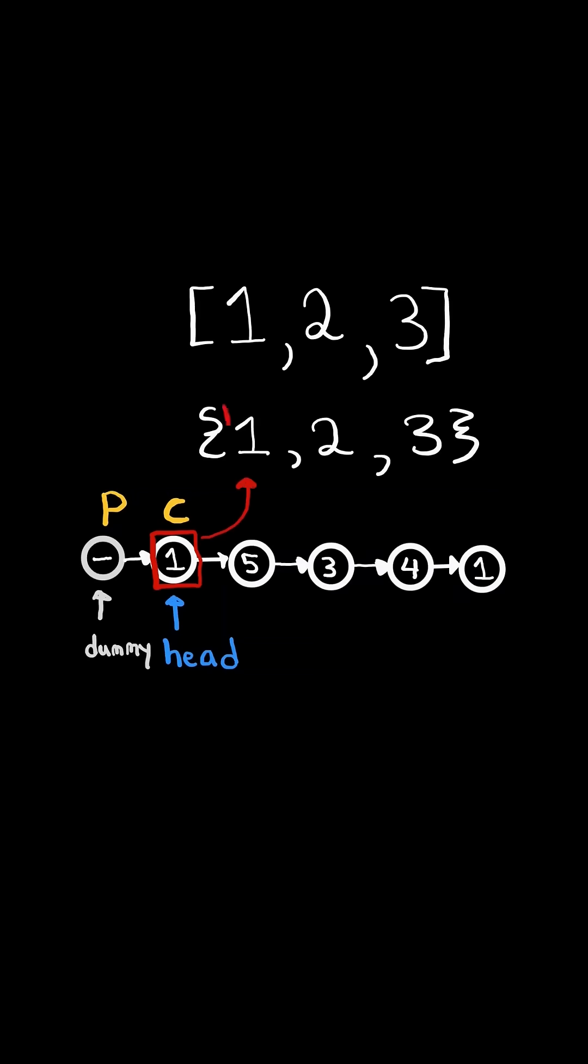If the current value is in the set, then we want to delete this node by setting the previous.next to current.next and advancing current to current.next. And we continue.